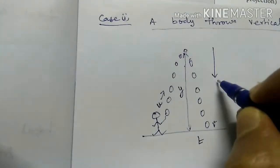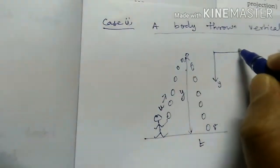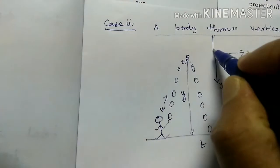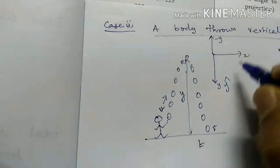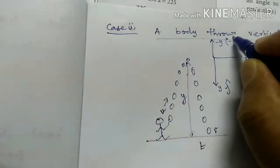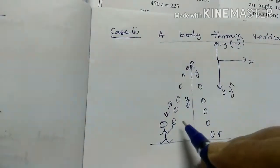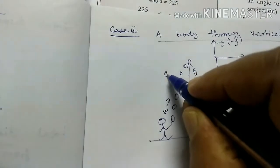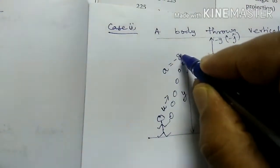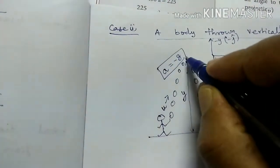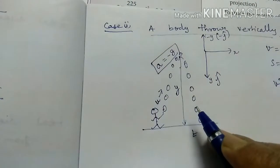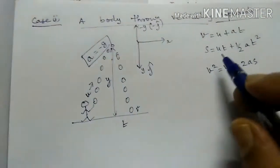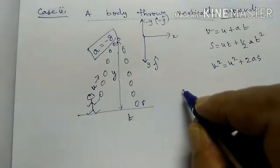The positive y-axis has unit vector j, and the negative y-axis has unit vector minus j. In upward motion, we take a equal to minus g. In the previous case of downward direction, we took a equal to plus g. In upward motion, a equal to minus g — that is very important. The equations of motion for this case are now applied accordingly.